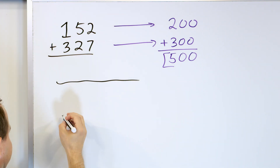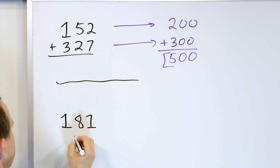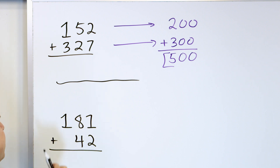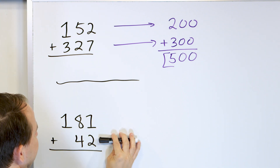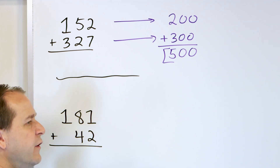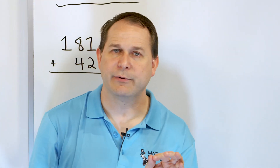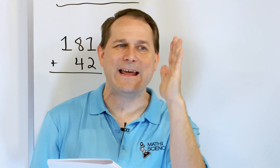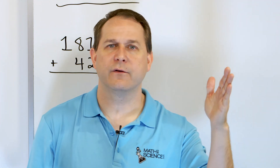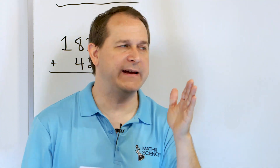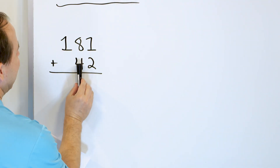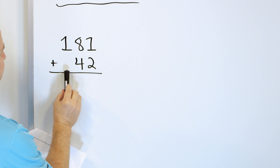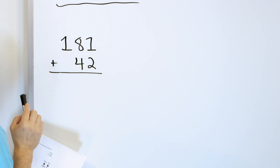Now pay very close attention to this problem: 181 plus 42. This is the first problem where the numbers do not have the same number of digits. This number has three digits and this one has only two digits. When you're estimating numbers, you always want to round them to the same position — either the tens or the hundreds or even the thousands. Since this one only has two columns and this one has three, we can only round to the tens place. We can't round to the hundreds place because this number doesn't even have a hundreds digit.